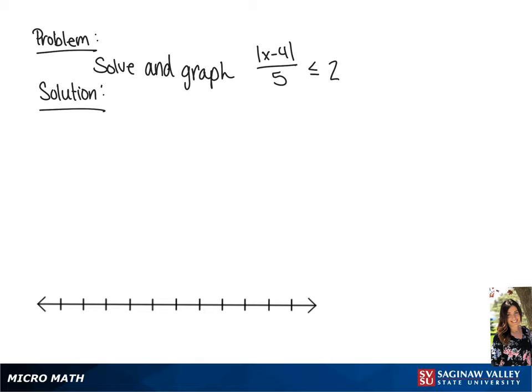We have the absolute value of x minus 4 over 5 is less than or equal to 2. The first thing we're going to do is multiply both sides of this inequality by 5 in order to clear the fraction.